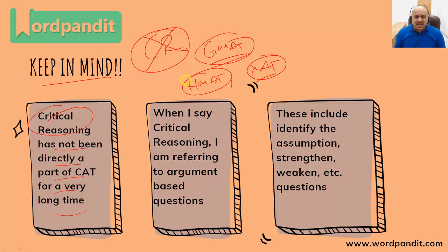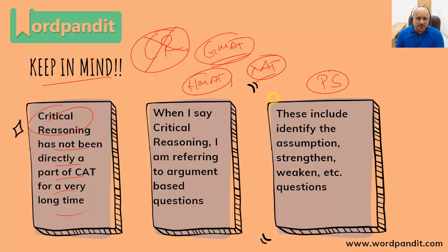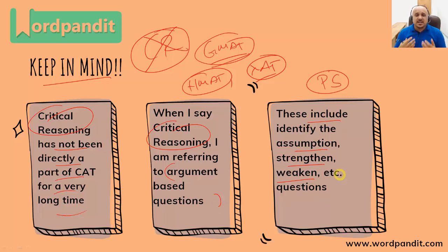NMAT has it in the LR section, the logical reasoning section. Now when I say critical reasoning, I am not talking about paragraph summary, I am not talking about parajumbles or misfit sentences — they are all part of verbal reasoning or ability. Critical reasoning specifically refers to argument-based questions where you identify assumptions, strengthen, weaken, paradox, flaw in reasoning, parallel reasoning — these kinds of questions.